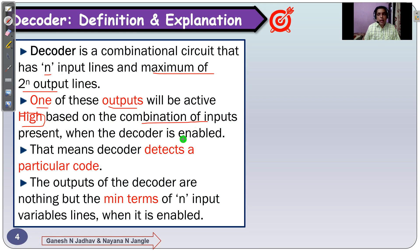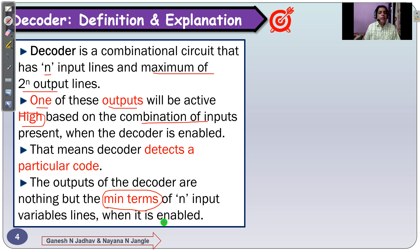When the decoder is enabled, the enable signal is also important. The decoder decodes a particular code — the outputs of the decoder are nothing but the minterms of N input variable lines when it is enabled. Note that in an encoder we use maxterms, whereas here it is minterms. We will now design this decoder circuit.